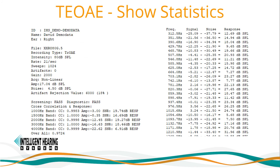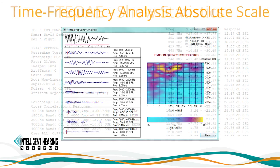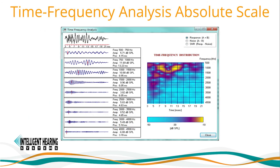All of the main information is displayed right on the display screen, but if you wish to see more frequency-specific bin-by-bin information, you can display the show statistics option. The Smart TEOAE software also provides graphical representation of the time frequency analysis and distributions for response, noise, and signal-to-noise ratio.